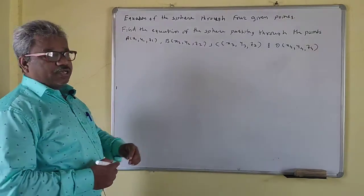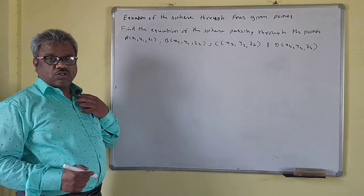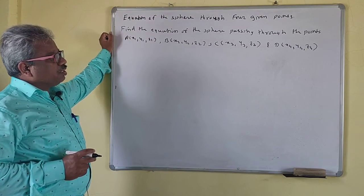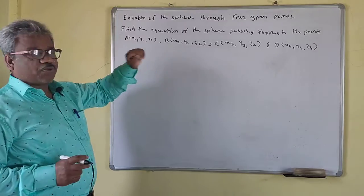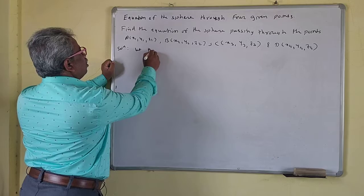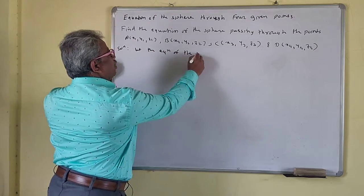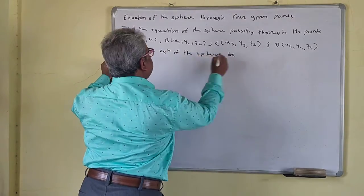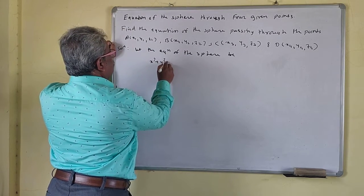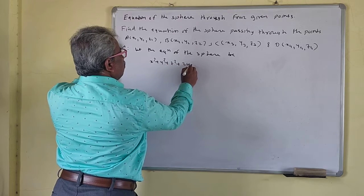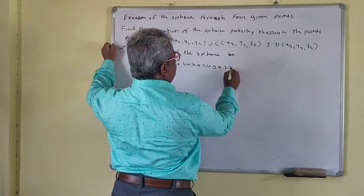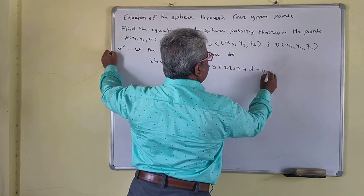We will find the equation of the sphere passing through four points. Let the equation of the sphere be x² + y² + z² + 2ux + 2vy + 2wz + d = 0. We call this equation 1.